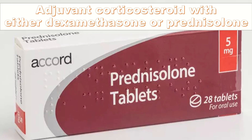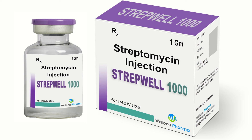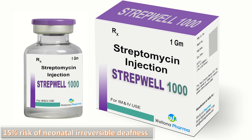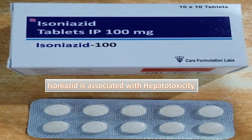All first-line anti-tuberculous medications are classified as category C by the FDA and are considered safe in pregnancy with no proven teratogenic effects. The WHO, British Thoracic Society, and CDC consider first-line anti-TB drugs safe during pregnancy, except for streptomycin, which is associated with a 15% risk of neonatal irreversible deafness and is not normally used in pregnancy. Hepatotoxicity associated with isoniazid is, however, a concern.